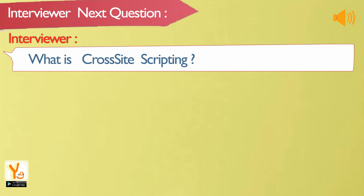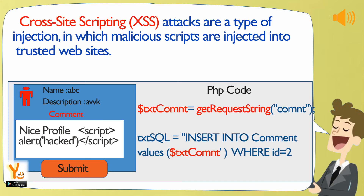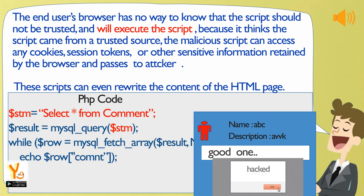What is cross-site scripting? Cross-site scripting (XSS) attacks are a type of injection in which malicious scripts are injected into trusted websites. The end user's browser has no way to know that the script should not be trusted, and will execute the script because it thinks the script came from a trusted source. The malicious script can access any cookies, session tokens, or other sensitive information retained by the browser and passes it to the attacker. These scripts can even rewrite the content of the HTML page.